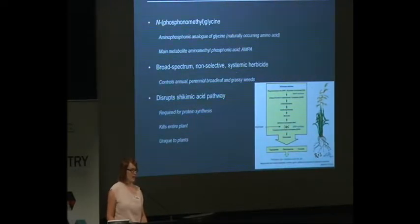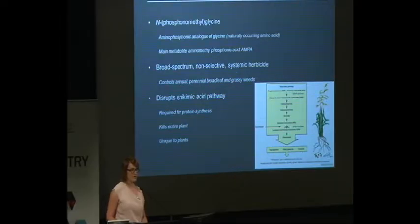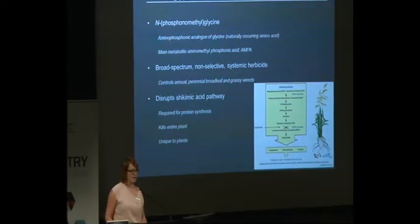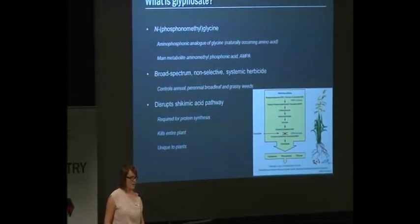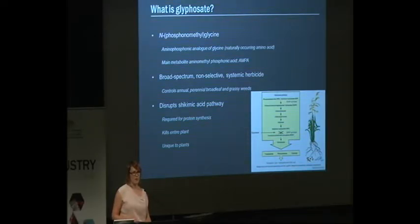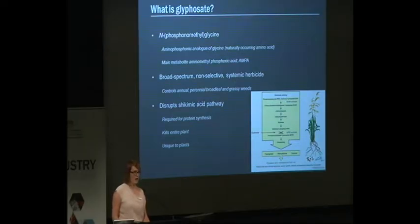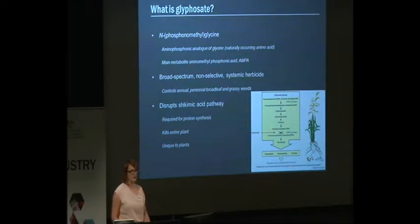Glyphosate is an analogue of glycine, which is a naturally occurring amino acid. It's a broad spectrum non-selective systemic herbicide and it's really commonly used to control all sorts of weeds — annual, perennial, broadleaf and grassy weeds — in home gardens, commercial settings, public areas and in agriculture. It is taken up by the leaves and all of the green parts of the plant, not the roots, and it's translocated systemically throughout the plant to kill the entire plant. It acts by disrupting the shikimic acid pathway, preventing the plant from generating essential amino acids required for protein biosynthesis. This pathway is unique to plants and not present in mammals.